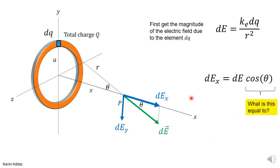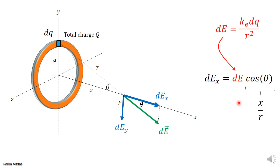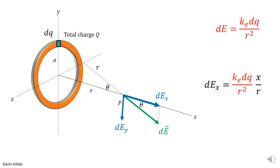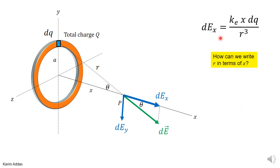What is cosθ in this problem? Looking at the right-angle triangle, the hypotenuse is r and the adjacent side is x, so cosθ = x/r. Substituting dE = ke·dq/r² and cosθ = x/r into the formula gives dEx = ke·dq·x / r³, combining the r² and r in the denominator. This is the x-component of the electric field due to this element of charge. We want the answer as a function of x, so we need to eliminate r.